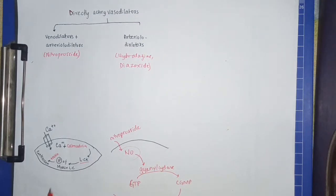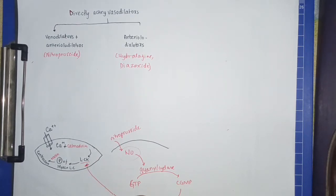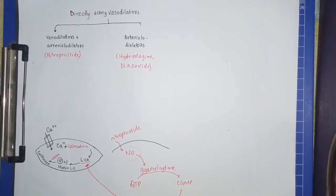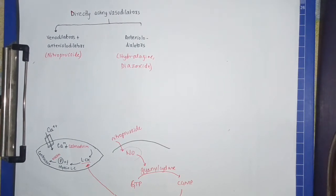Protein kinase G actually phosphorylates this light chain kinase, and when light chain kinase is phosphorylated, it becomes inactive. When it becomes inactive, there is no phosphorylated myosin light chains with actin, and there is no contraction. This leads to venodilation and arterial dilation, since nitroprusside is both veno as well as arterial dilator. When arteries are dilated, total peripheral resistance is reduced and diastolic blood pressure is reduced. When veins are dilated, venous return is reduced and systolic blood pressure is reduced. This was the mechanism of action of nitroprusside.